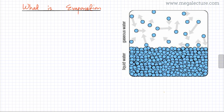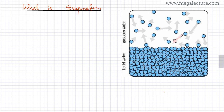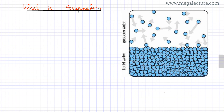Evaporation occurs at the surface when some particles become energetic enough to overcome the strong forces of attraction — the intermolecular forces — and they're able to escape into gaseous state, moving freely. This is what evaporation is. It's a surface phenomenon.